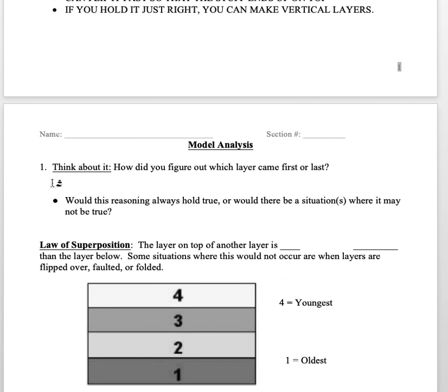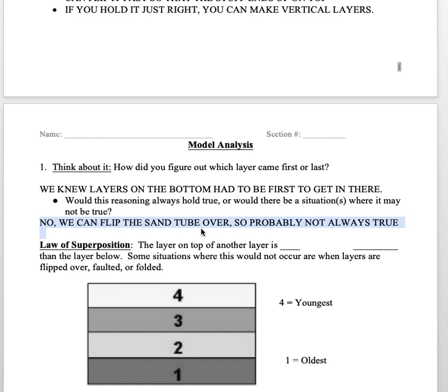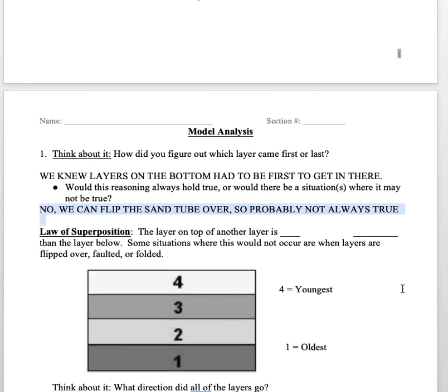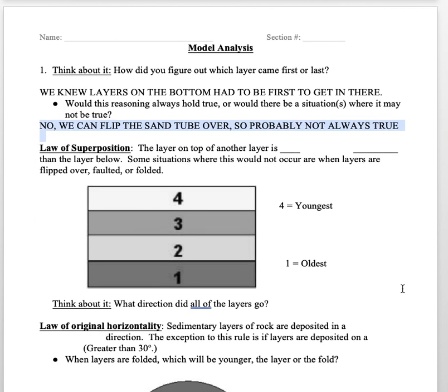We knew which layer came first and which layer came last because we knew the layers on the bottom had to be there first in order to get in there. I couldn't have stuck a layer in there before I put something else. Now we know from playing with the sand tube that's not always true, because if we flip it over we could get the layers to land on top. You can imagine like a rock tumbling down a hill after a rain might not land on its bottom, it might land on top.